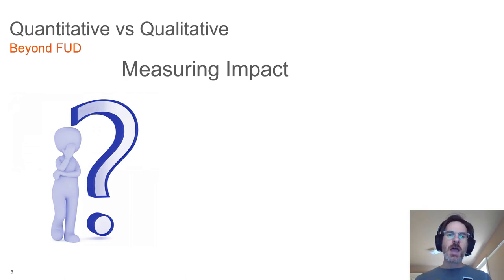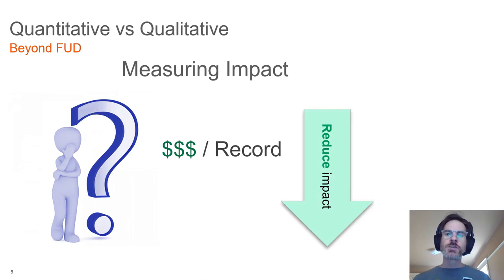Armed with the knowledge of average cost per record, what controls decrease costs, and which gaps increase costs, a more robust risk assessment can be created.